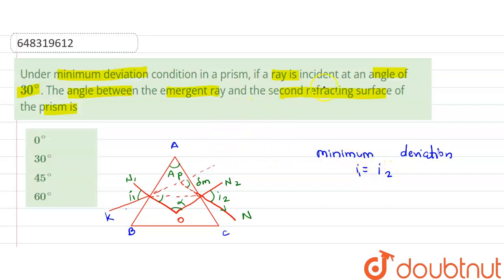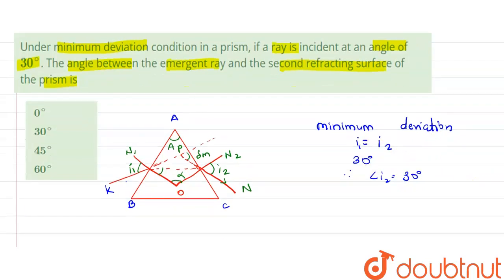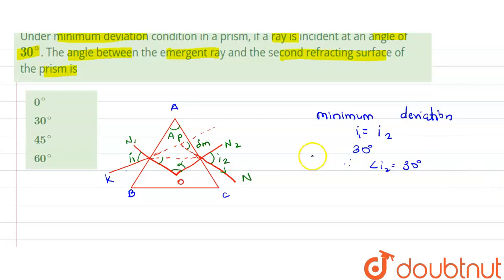So here angle of incidence is given I equal to 30 degrees. Therefore, we have angle I2 is equal to 30 degrees, because angle of incidence is equal to angle of emergence.